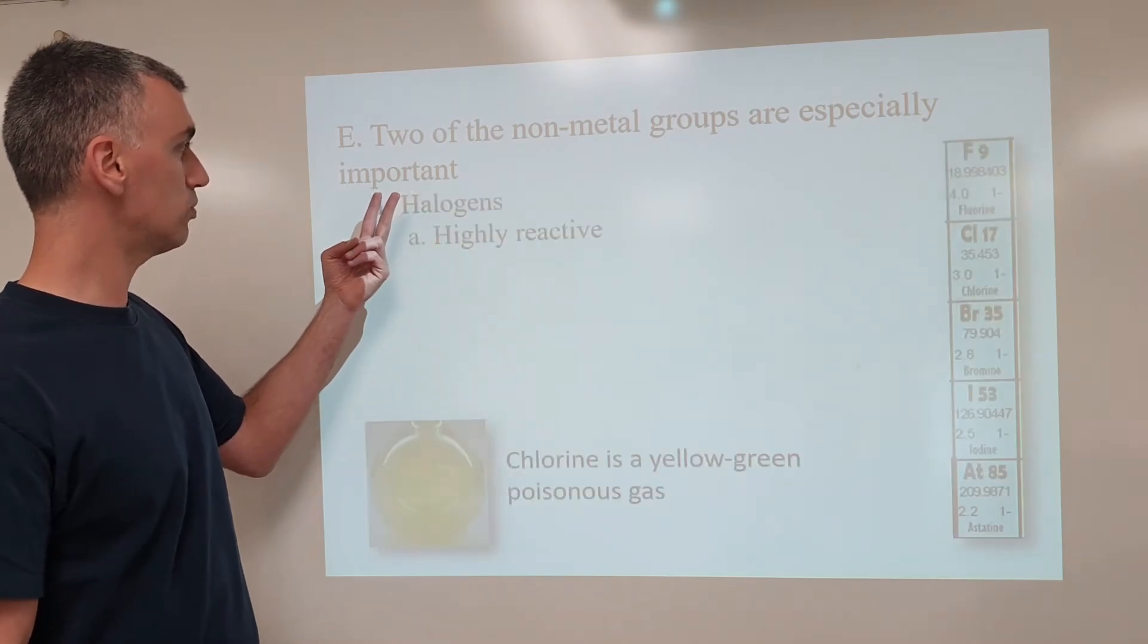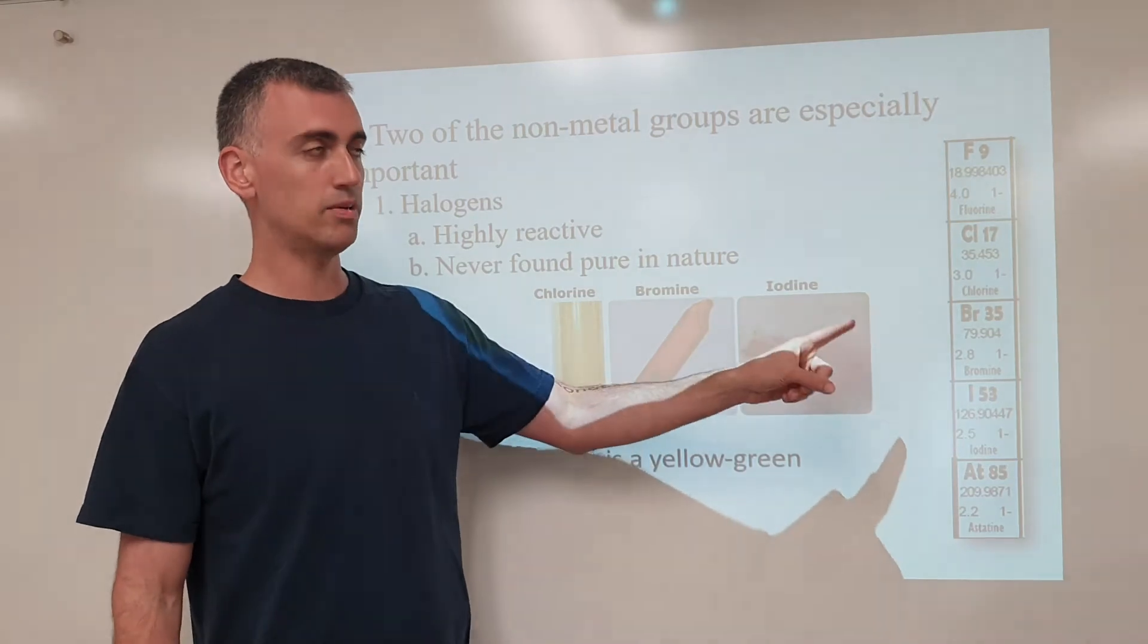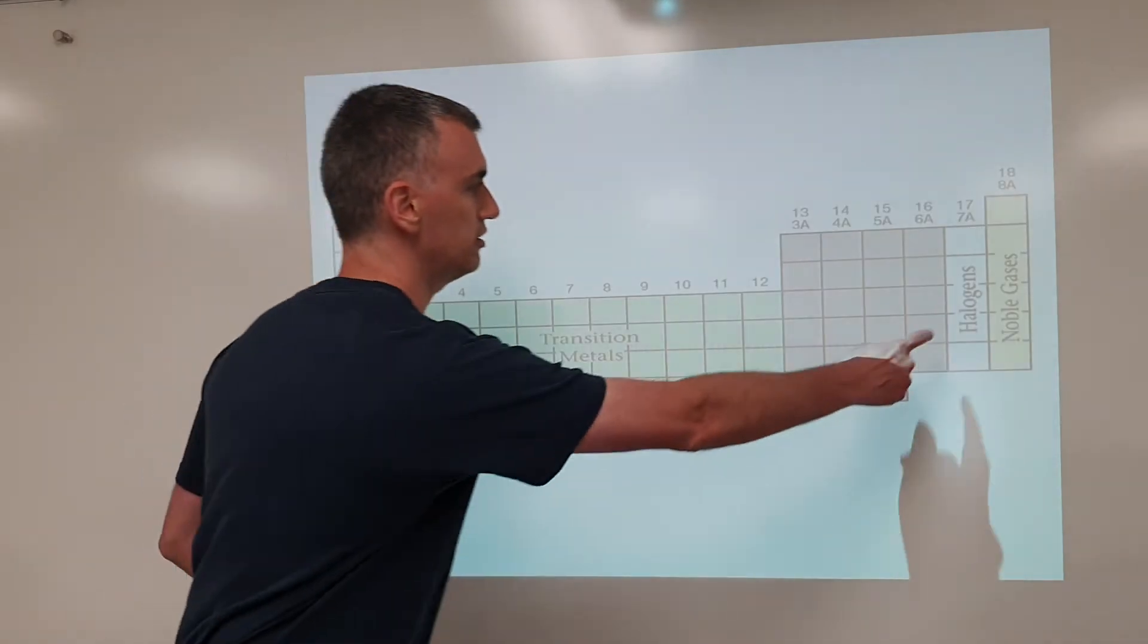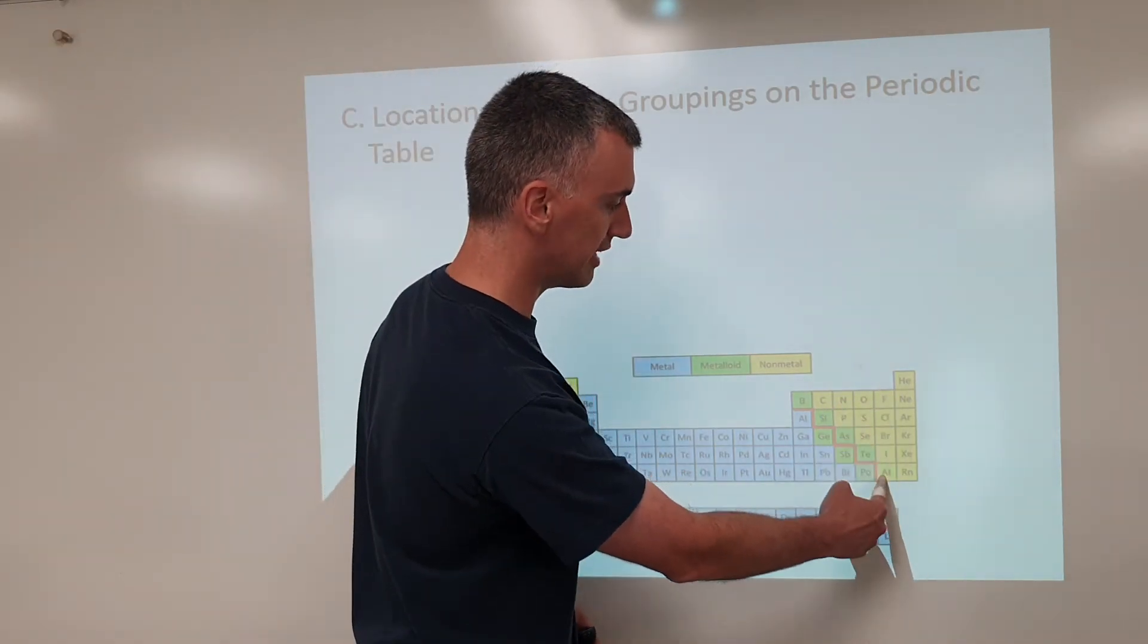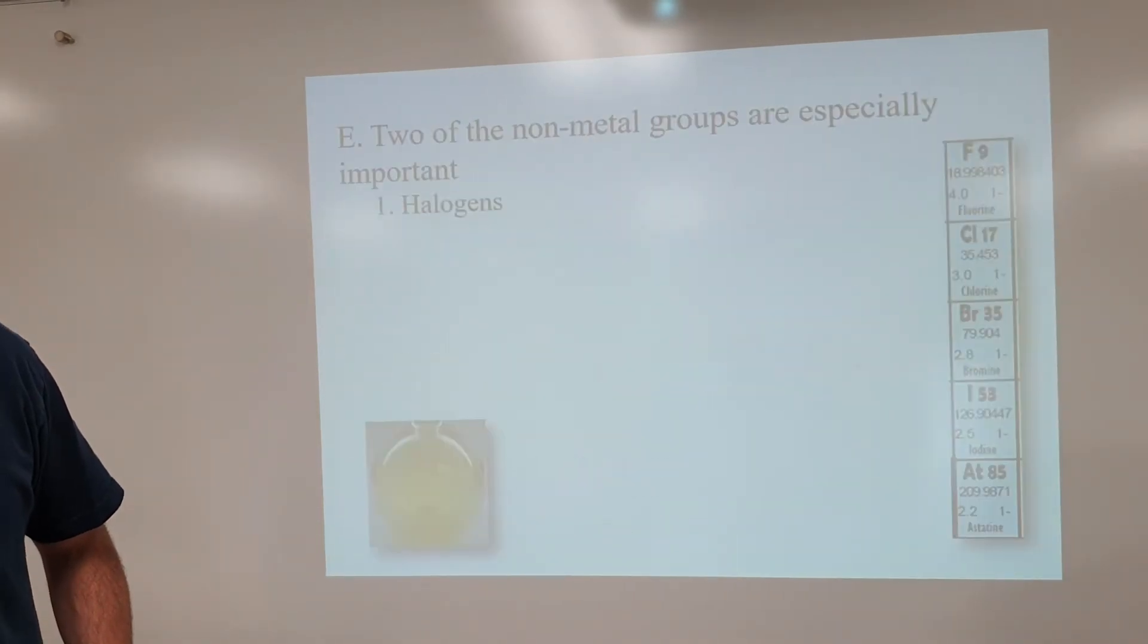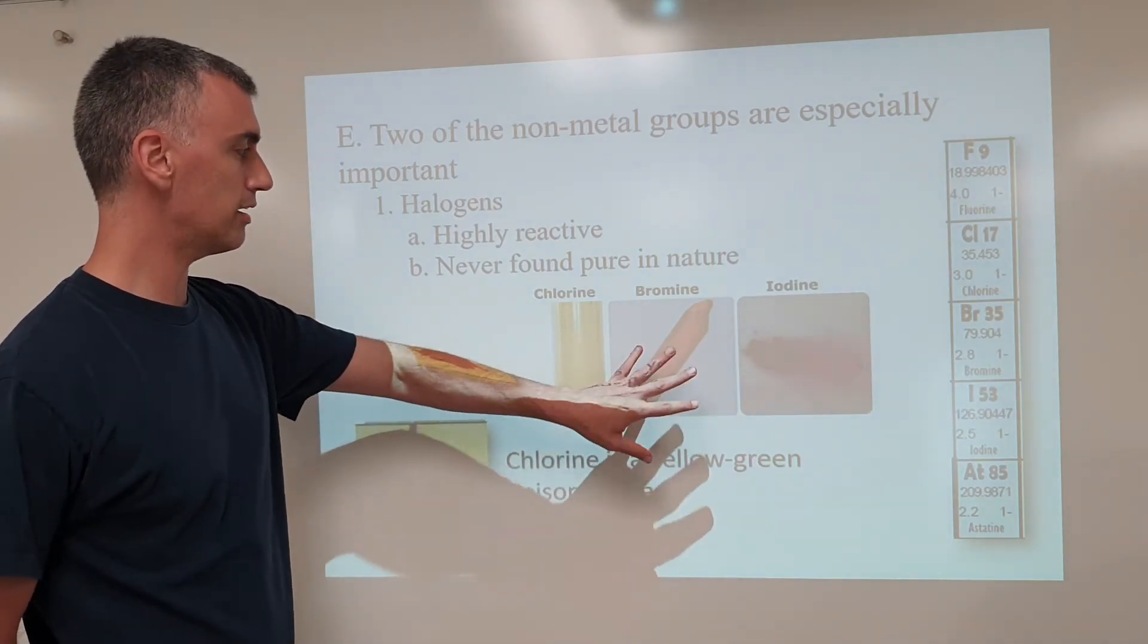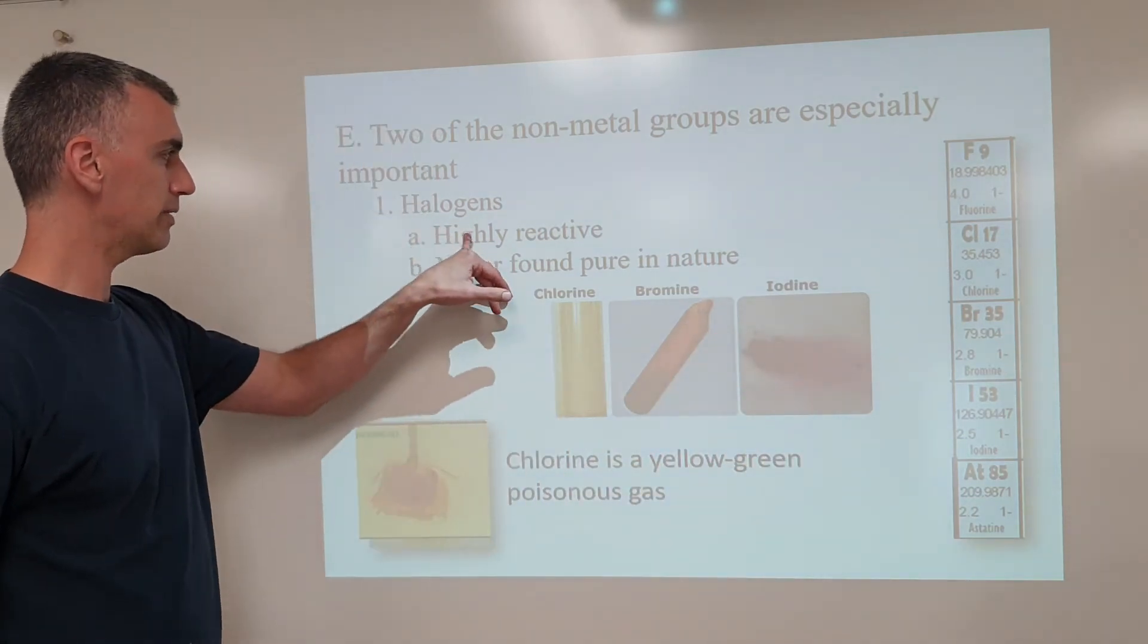Now we do need to go more specifically now into some of the groups of non-metals. The halogens is one. It is the second from the far right on the periodic table. Starts with fluorine, ends with astatine at the bottom. So the halogens are known for being quite reactive. Maybe not as reactive as the alkali metal, but they are still very reactive. Some are chlorine's a gas at room temperature, bromine's a liquid at room temperature, iodine's a solid at room temperature. But they're highly reactive, which means they're also quite poisonous.